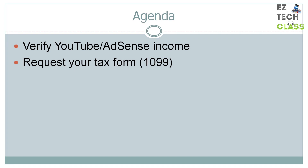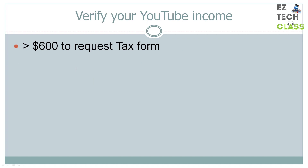Once you have verified your YouTube earnings from last year, you can request your tax form through your Google AdSense account. The YouTube team is going to send you your tax form in an encrypted format. You'll use your password to open that email, then review and verify the tax form. And if you find anything incorrect, you can contact the YouTube team as soon as possible to correct the form. We'll go through the PowerPoint slide deck first, then I'll show you a live demo on my Google AdSense page. The first step is to verify that your YouTube income last year is more than $600 to be able to request the tax form.